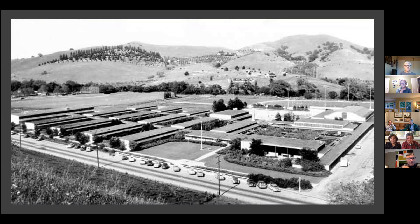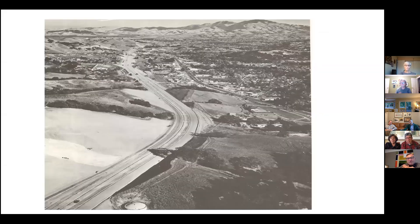Another thing that amazed me about this photo — where is Walnut Creek? It's not even there. It hadn't even been born yet, really. It was still just a small branch town out in the East Bay, probably like we look at the Oakley area today. Still ranch hands. But Lafayette was right at the start of emerging growth. When this picture was taken, the Lafayette population was 6,000 people.